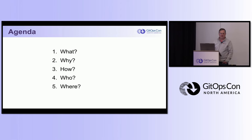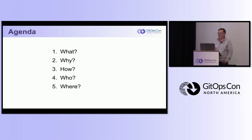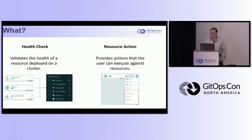Some background: I'm with Red Hat. We have a Kubernetes distribution called OpenShift, which is extremely operator-heavy. We have operators for managing nodes, for managing authentication - operators for everything. Which means this topic is really important for us, and is why I'm passionate about it - you really need health checks and resource actions to allow your users to manage those operators effectively.